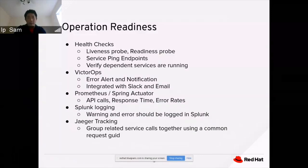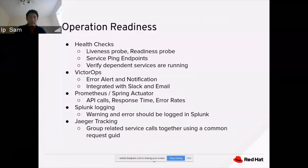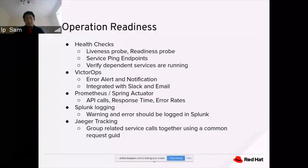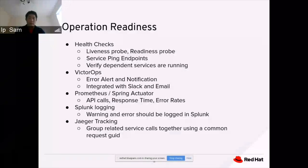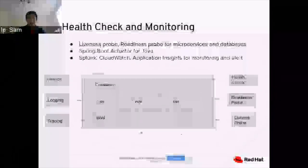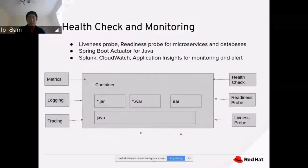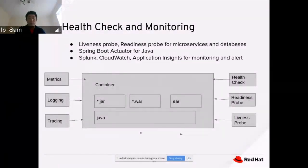OpenShift also has Splunk integration — all warning and error logs are sent to Splunk so you can query and view logs in detail. Jaeger tracing is another integration with OpenShift that allows us to group services together using a common request ID, so we can track service orchestration, run the service call workflow, and use that for debugging and troubleshooting. Health checks, monitoring, metrics, logging, and tracing are all tied to our containers.